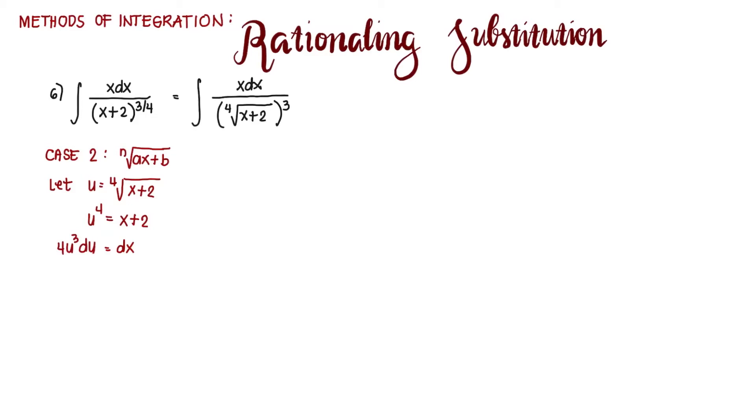We do this to replace all variable x's with the new variable u, so that the new variable of integration will now be u. We have x in the numerator. We can transpose 2 to the left side. Transposing 2 to the left side, we have u^4 - 2, which gives us x. So we can use that now for substitution.